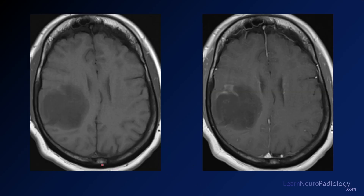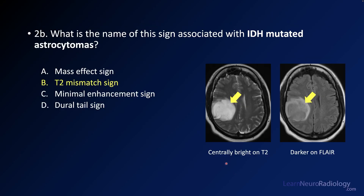Here you see your pre- and post-contrast images — again a relatively well-delineated mass with some mass effect, but not a great deal of enhancement. You have some enhancement along the anterior margins of the tumor. A little intermediate amount of enhancement makes you think this is probably going to be a low to intermediate grade tumor. The central portion is very bright on T2 but darker on FLAIR — that's the T2 mismatch sign.